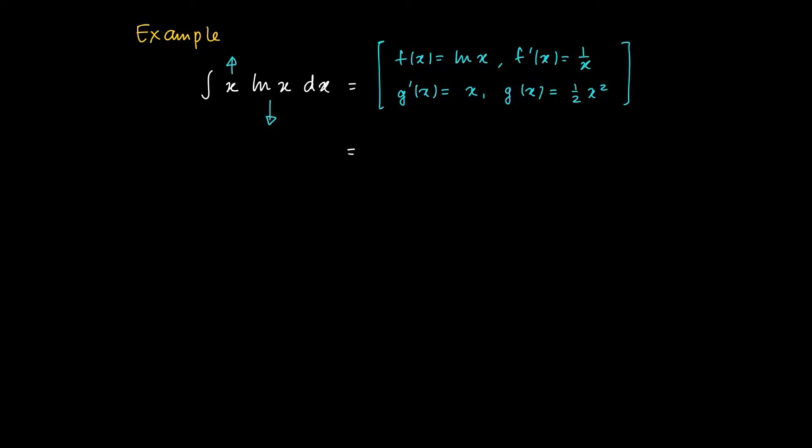So using integration by parts, we see that this equals g of x times f of x, which is a half times x squared times ln of x, minus the integral of a half times x squared times the derivative of ln of x.